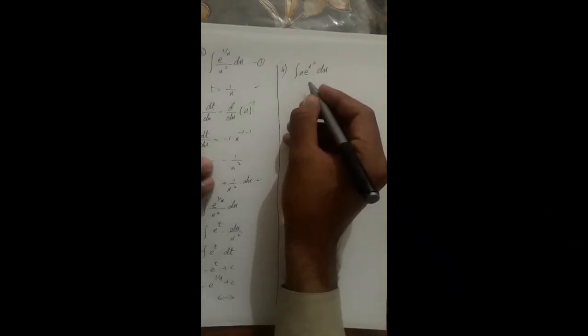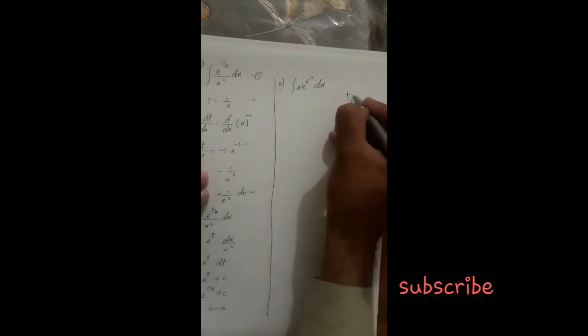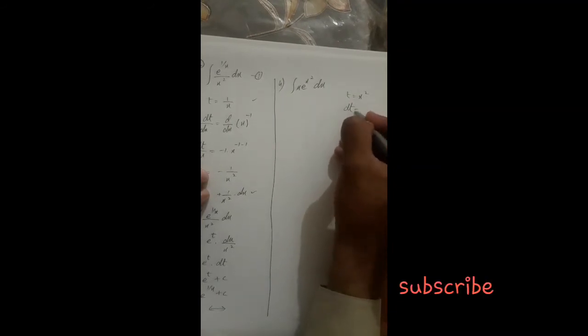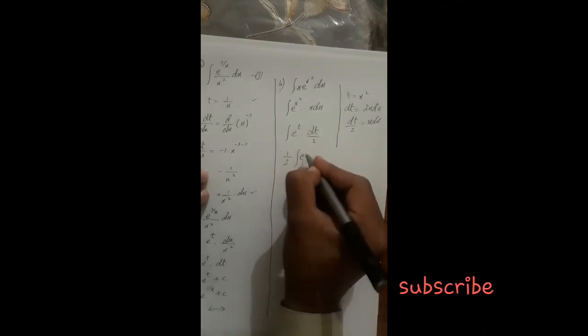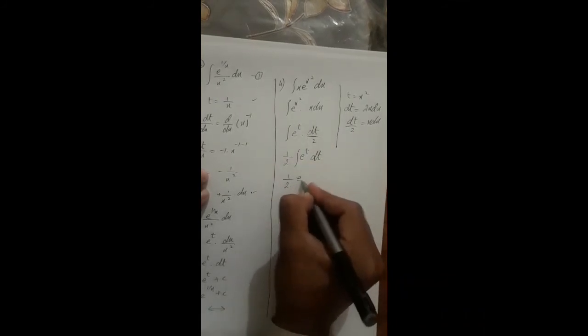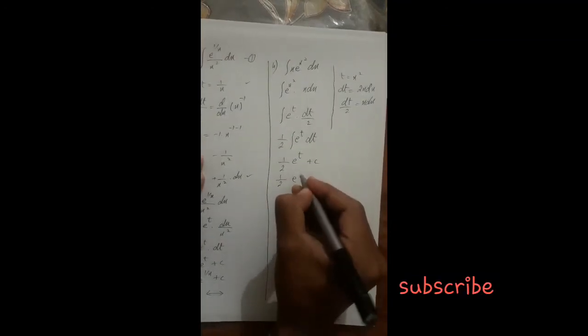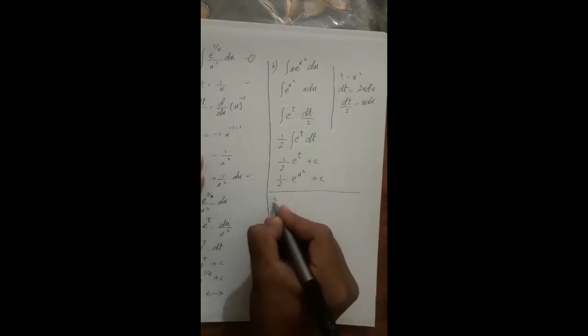Next question: integrate x times e^(x²). Here the power is x², so we put t equal to x². Then dt/dx equals 2x, giving x dx equals dt/2. Replacing e^(x²) with e^t and x dx with dt/2, the integral becomes (1/2) times the integral of e^t dt, which equals (1/2) e^t plus c. Substituting back: (1/2) e^(x²) plus c.